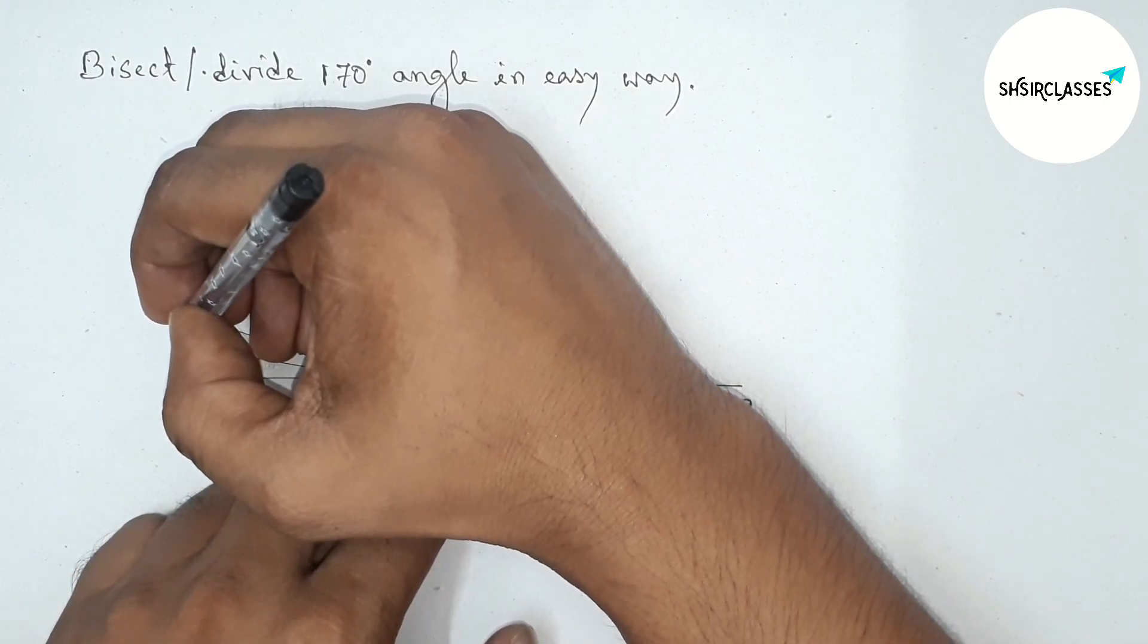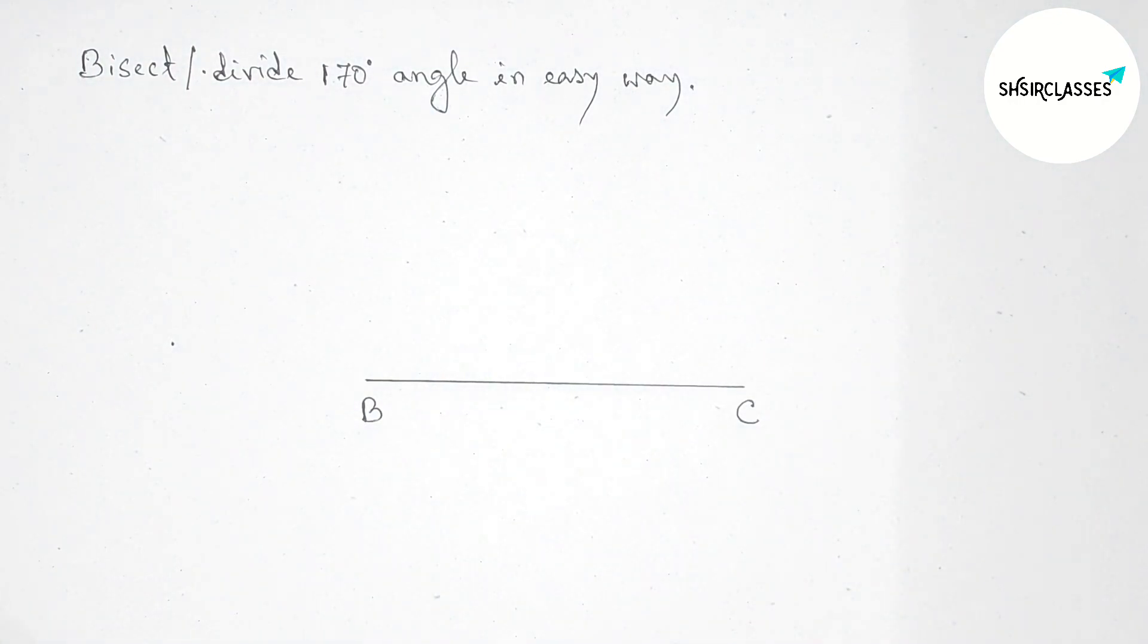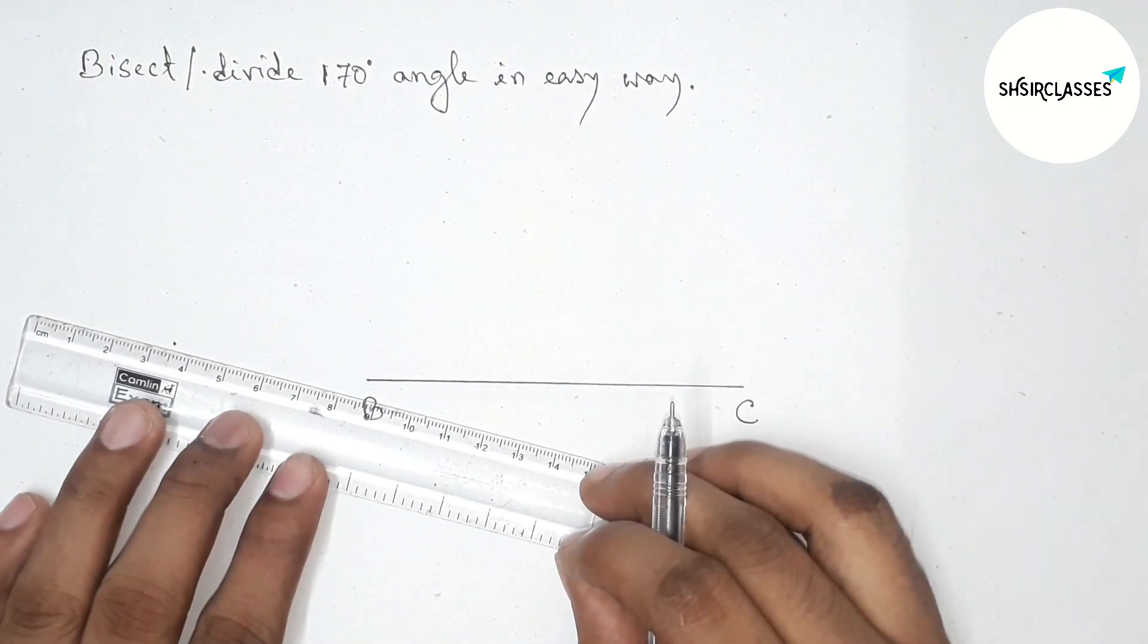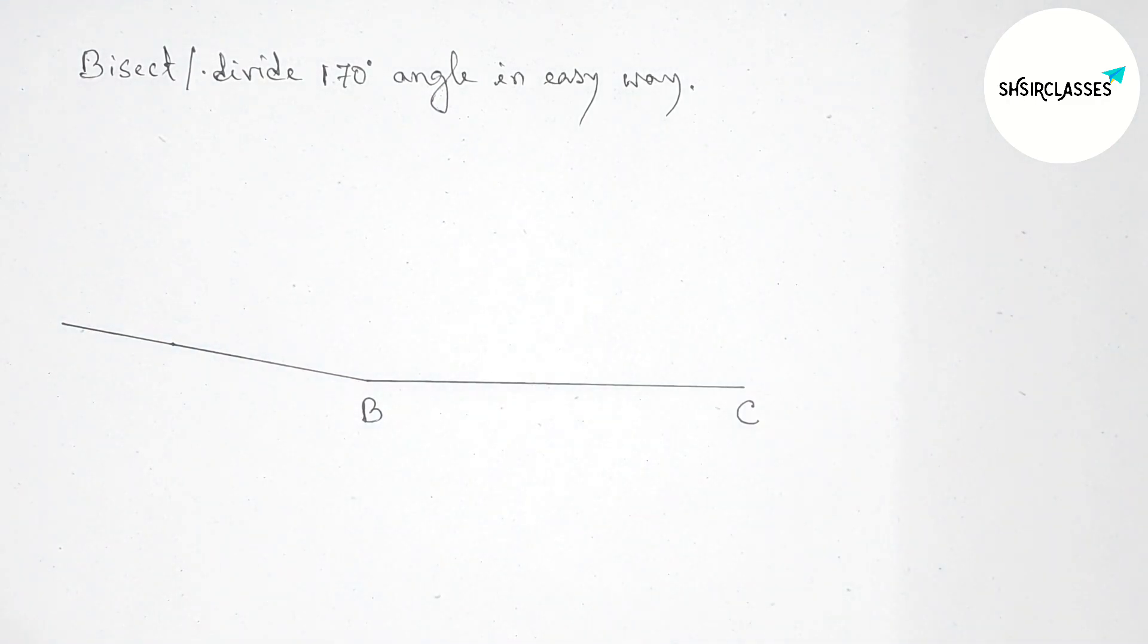Marking the 170-degree angle perfectly. Next, joining this line to get the 170-degree angle. Now taking here point A.